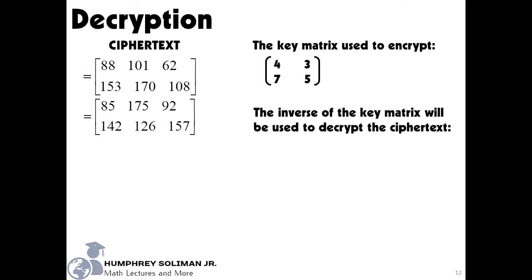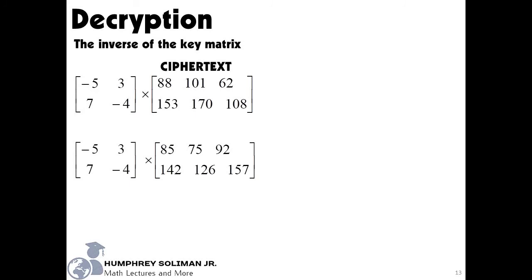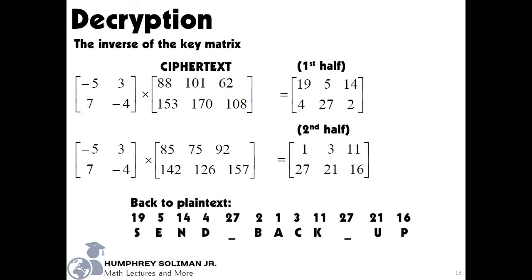The inverse of the key matrix will be used to decrypt the cipher text from your classmate. After we get the inverse of the key matrix, we will multiply it with the cipher text. If done correctly, this will show the plain text of their message. As for us, we used the cipher text and led us back to the plain text message we started with, send backup.